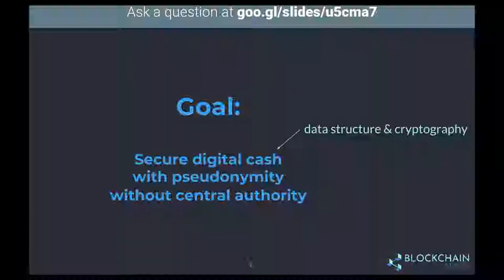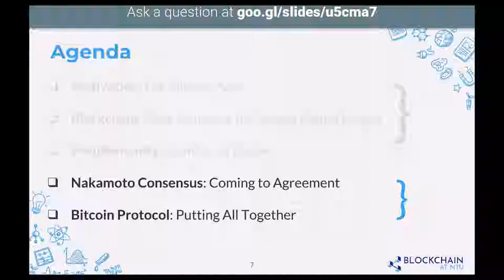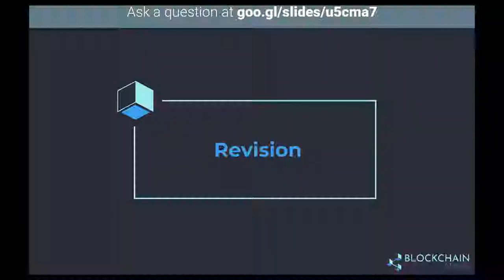We already covered data structure and cryptography, which helped us solve how to build a secure digital cash. Then we introduced identity on Bitcoin to solve how to achieve pseudonymity on the Bitcoin network. The third part, which we're covering today, is how do we use distributed consensus to build such a ledger without any central authority.